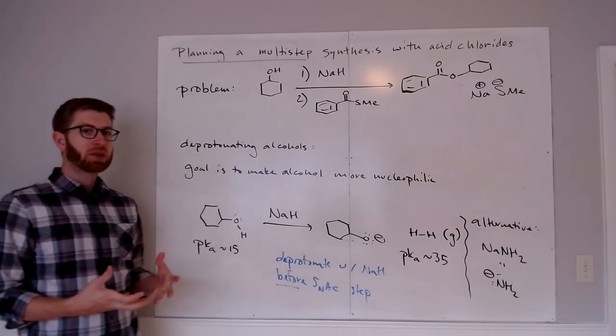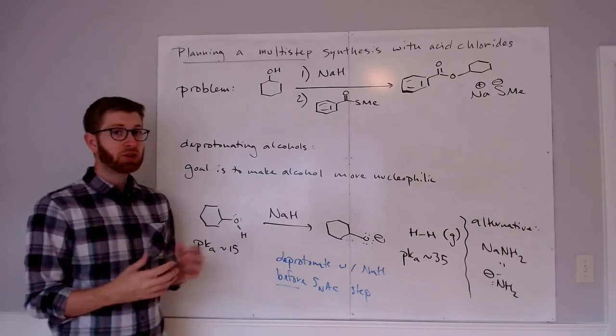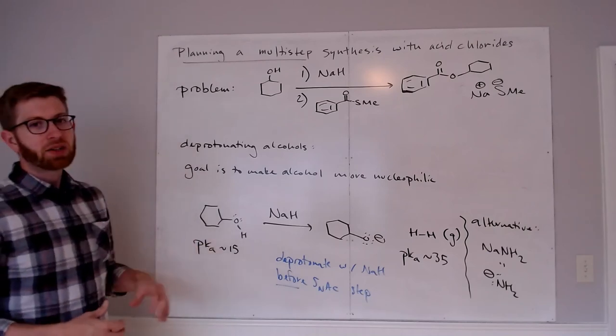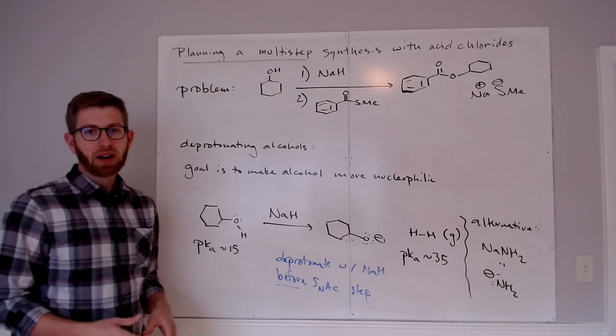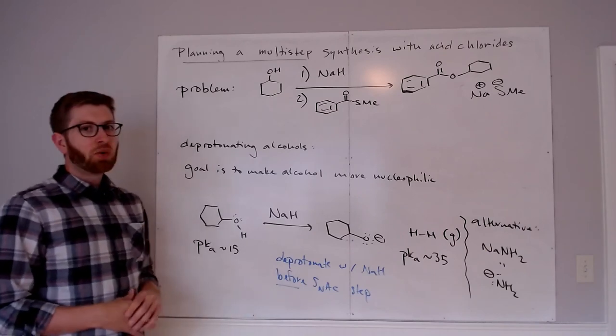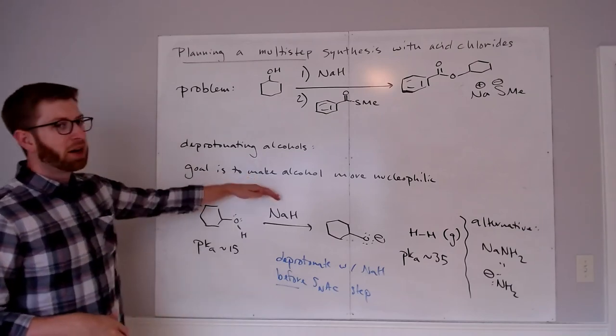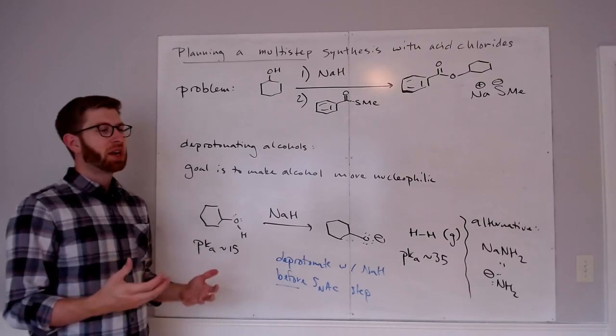So a couple of strategies for adding bases to alter the ways that SNAC reactions behave. Now these are very practical considerations, either using things like triethylamine or pyridine to destroy acidic byproducts, or trying to get SNAC reactions that you think might be kind of slow, so things involving poor nucleophiles like alcohols, and only okay electrophiles like thioesters or maybe other esters. You can use things like sodium hydride to actually form better nucleophiles before the SNAC reaction.